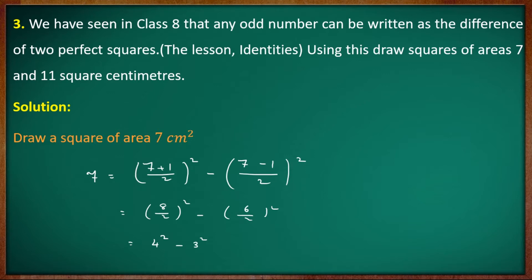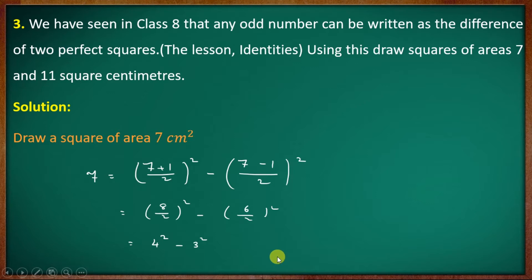If you construct a right triangle, you can see one side. Using a 5-5 configuration, you can form a triangle. The triangle has sides 4 and 3.